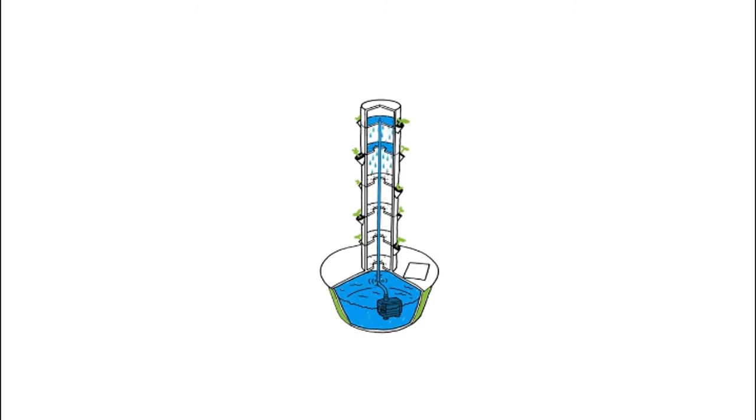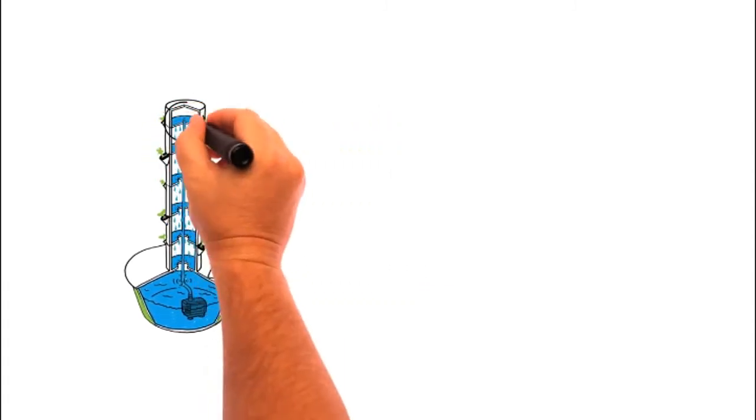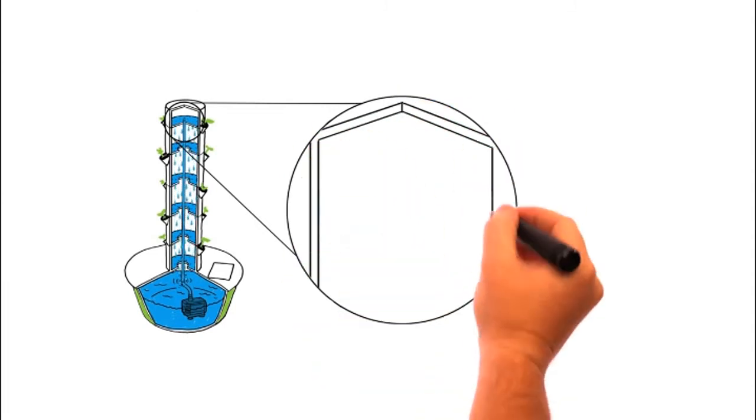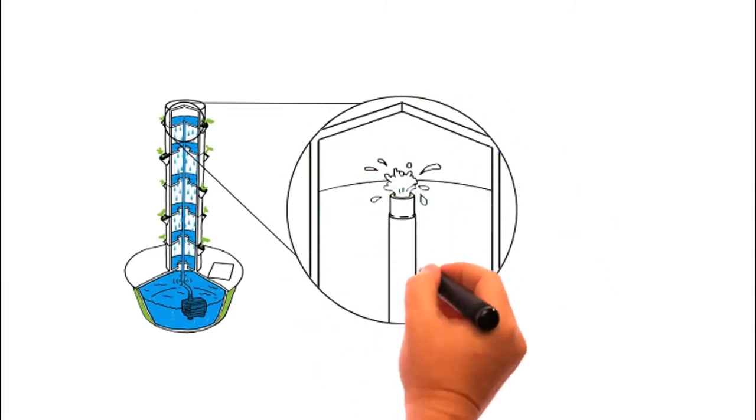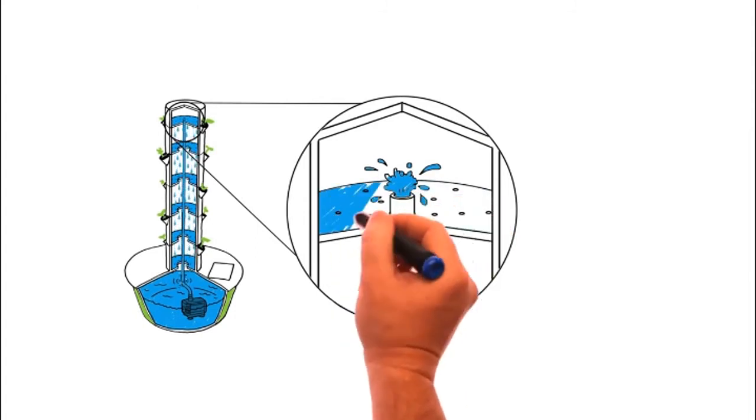From there, the nutrient solution drips through the central tower using a special device that evenly cascades the solution over the exposed plant roots. On the journey down the tower, the nutrient solution feeds the roots and becomes highly oxygenated as it cascades gently down to the reservoir.